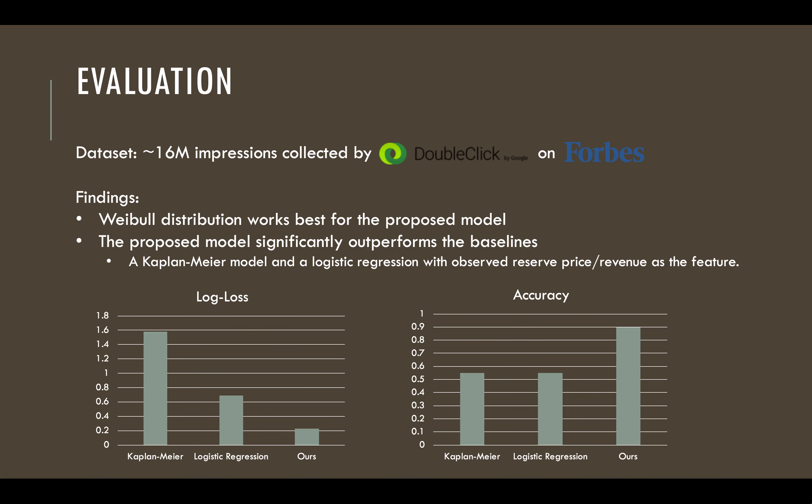Our real-life dataset contains about 16 million impressions collected on the Forbes platform. The experimental results show that the Weibull distribution works the best with the proposed model, and the proposed model significantly outperforms the baselines measured by multiple metrics.